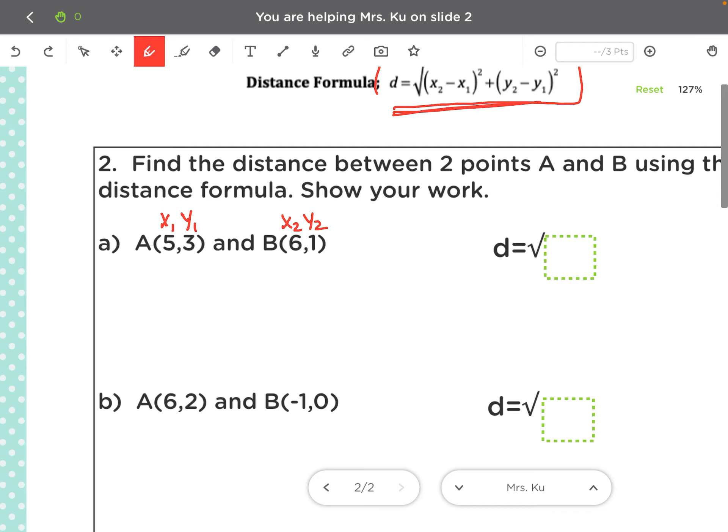And just using the formula that's right up here, the distance formula says we do the square root of, you take x2 minus x1 squared plus y2 minus y1 squared.